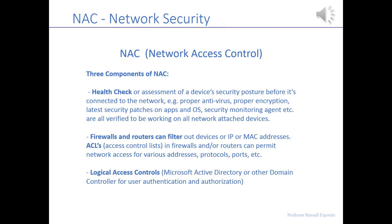The second technique under NAC is filtering. Firewalls and routers filter IP addresses or MAC addresses — every device has a MAC address, like a social security number for every piece of hardware, whether it's a phone, laptop, desktop, or tablet. You can create filters called ACLs, access control lists, to allow or deny certain devices into certain parts of the network or subnets. ACLs can be in firewalls or routers and are another way to filter traffic.